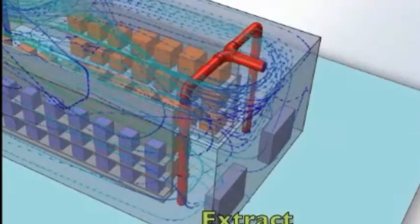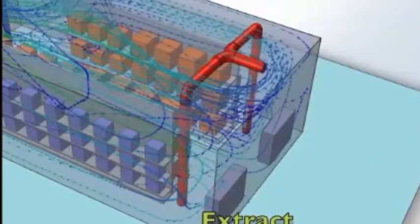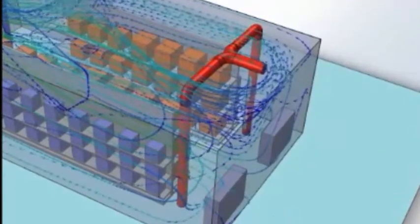The contaminated air is removed at both low level and high level at the opposite end of the room as shown by the red ducting.